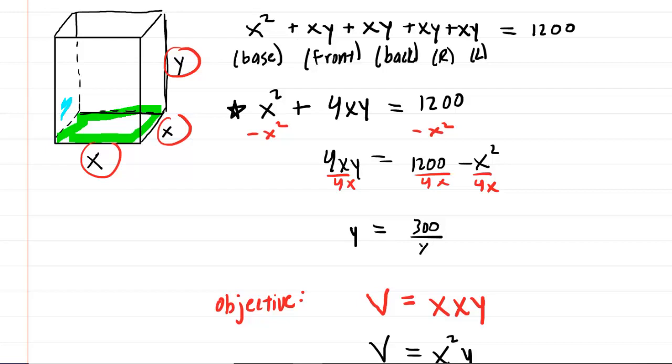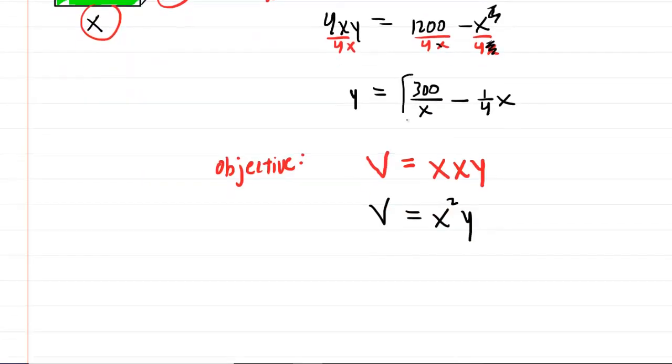This will still be over X. Notice that X is still in the denominator of the fraction. And then over here, we can actually reduce. We can cancel a factor of X in the denominator with a factor of X in the numerator. So that's going to give us X over 4. I would prefer to write that as 1 fourth X. So we've solved the constraint for Y.